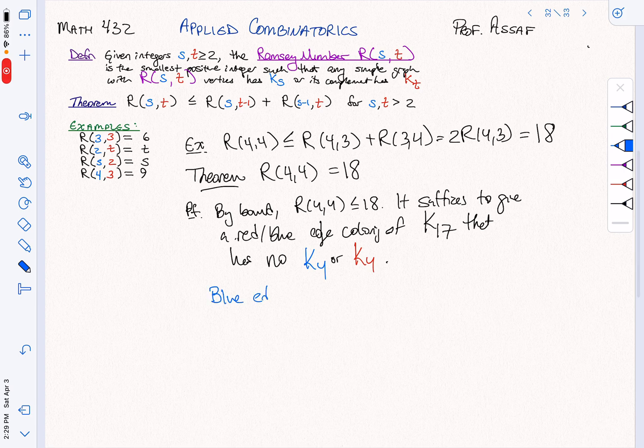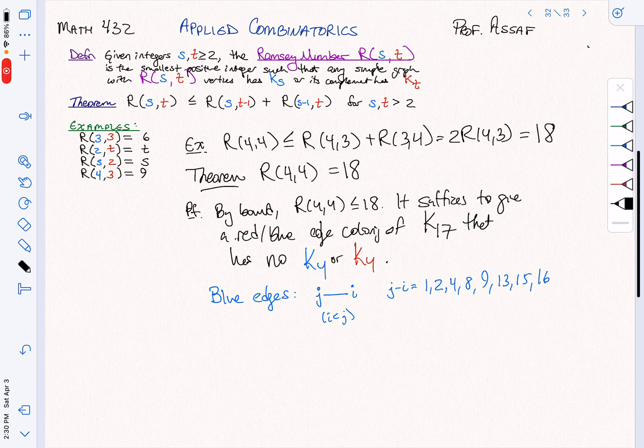Well, here's the answer. So what are my blue edges going to be? They're going to be an edge between every pair of indices. So we're going to have J to I with a blue edge. And here I'm assuming that I is less than J. Just to describe this, if J minus I is equal to 1, 2, 4, 8, 9, 13, 15, or 16. Why those numbers?